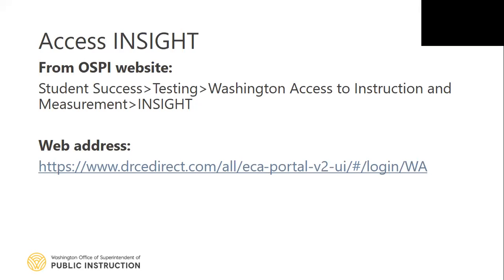Insight can be accessed through the WA-AIM website by following this path: Student Success, Testing, Washington Access to Instruction and Measurement, Insight. Additionally, it can be accessed through the following web address: https://www.drcdirect.com/all/ECA-portal-V2-UI/#/login/WA.